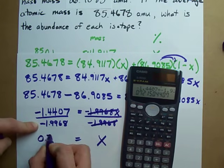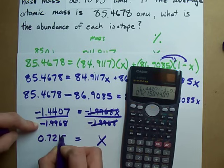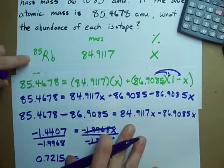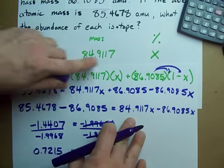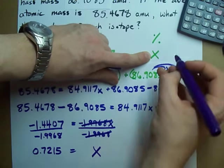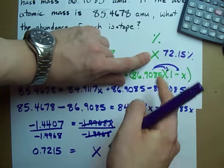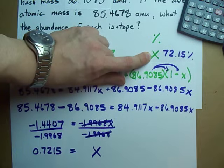And on the left hand side, negative 1.4407 divided by negative 1.9968. I get 0.7215. So the isotopic abundance of RB85 turns out to be 72.15%. Notice how I converted from the decimal to a percentage.